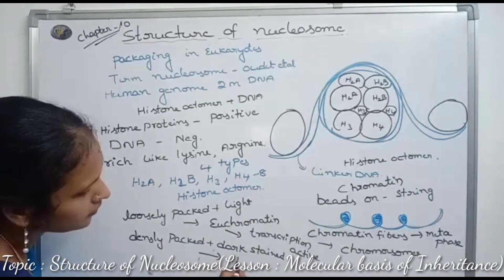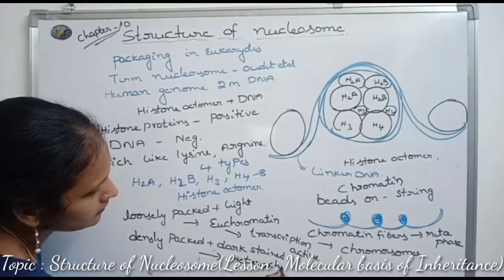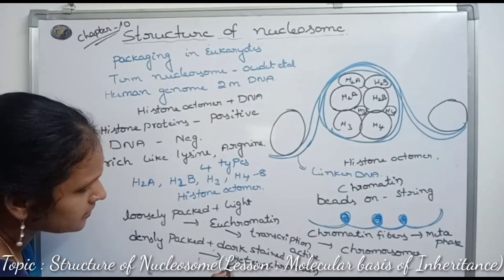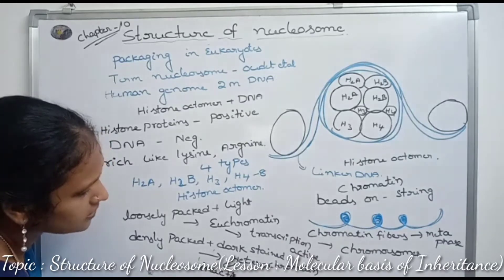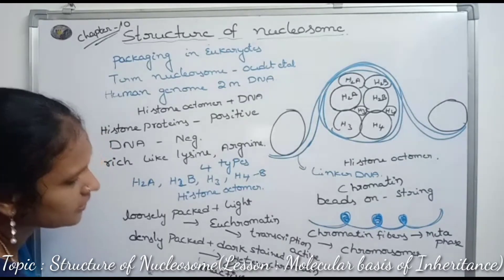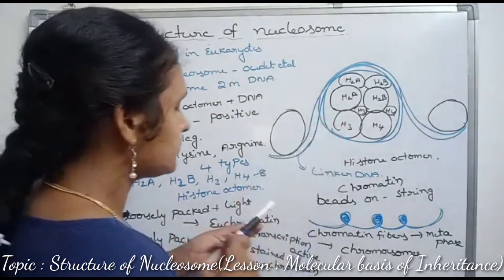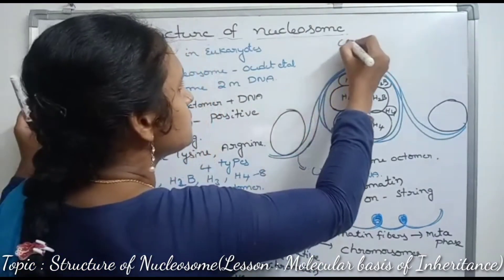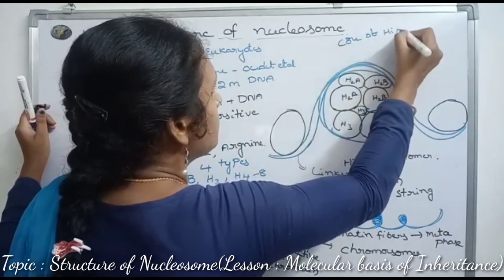Some regions are tightly or densely packed and dark stained — this is called heterochromatin. Heterochromatin is transcriptionally inactive.